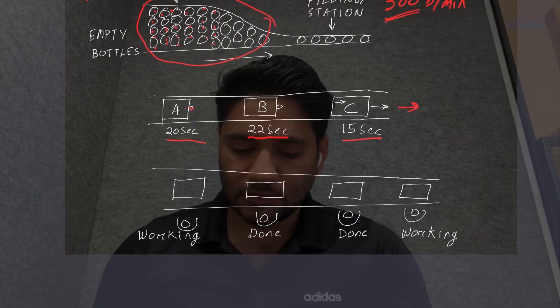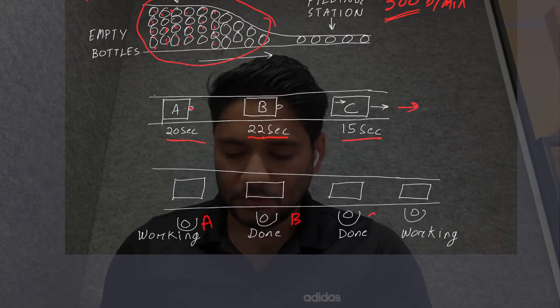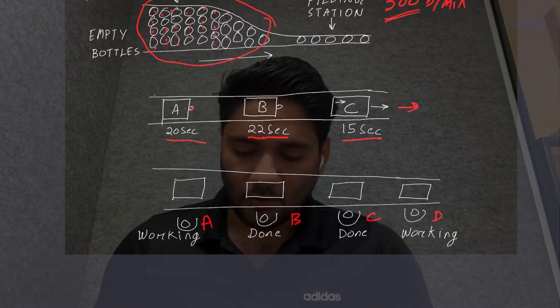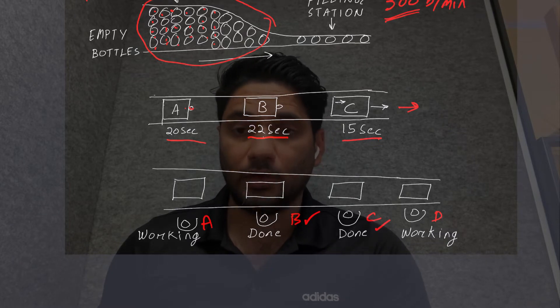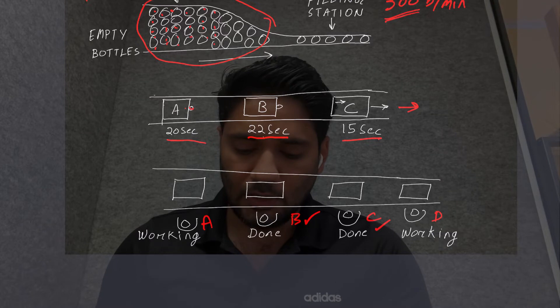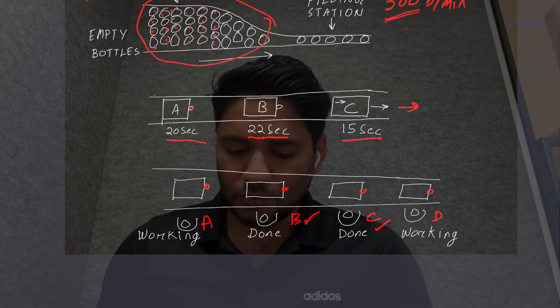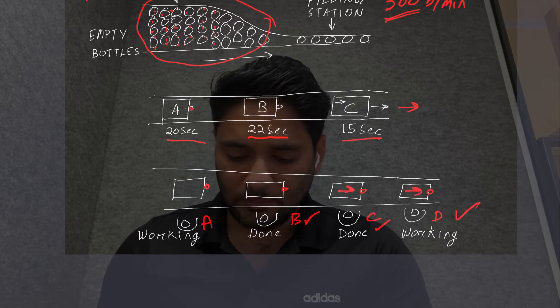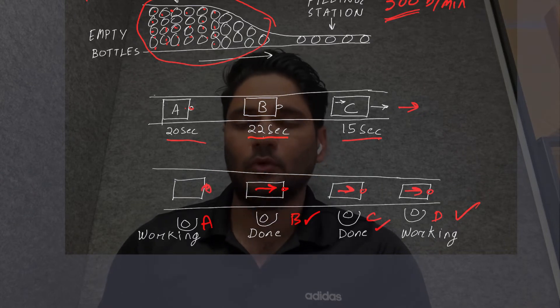The third case is when multiple operators are working. Let's say A, B, C, and D operators are working. Operators B and C are done with their job, but A and D are still working. So in this particular case, we can engage the stopper of all four conveyors and make them accumulate. As soon as D is complete, all three can move forward. Let's suppose in this case A is still working, so we can keep on holding it.